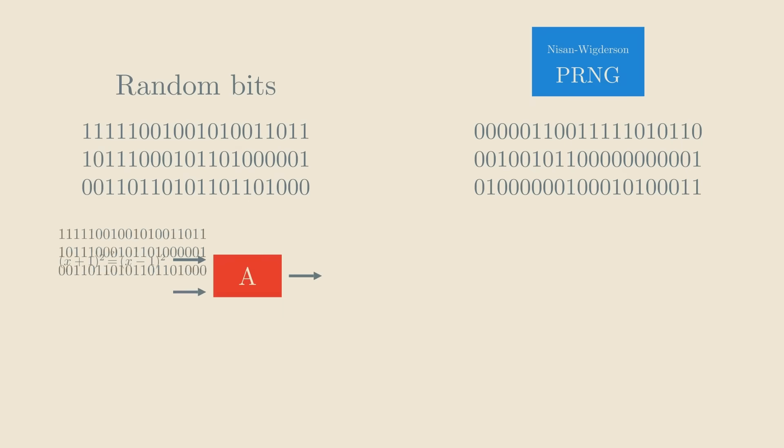We have the Nisan-Wigderson generator, which generates bits that are indistinguishable from truly random ones by any fast statistical test. We take any algorithm that solves a BPP problem, and instead of running it with truly random bits, we run it with pseudorandom ones.